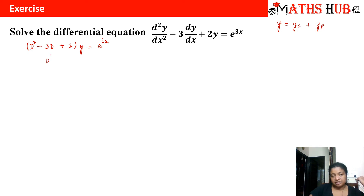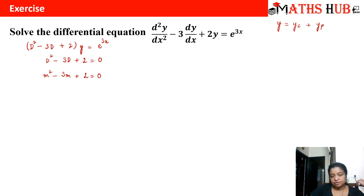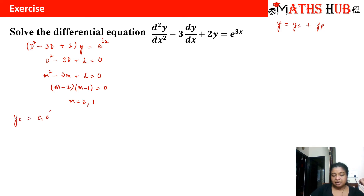The auxiliary equation is D² − 3D + 2 = 0. Replacing D with m gives m² − 3m + 2 = 0, which factors as (m − 2)(m − 1) = 0, giving two distinct roots m = 2 and m = 1. So the complementary solution is yc = c₁e^(2x) + c₂e^(x). Now let us calculate the particular integral.